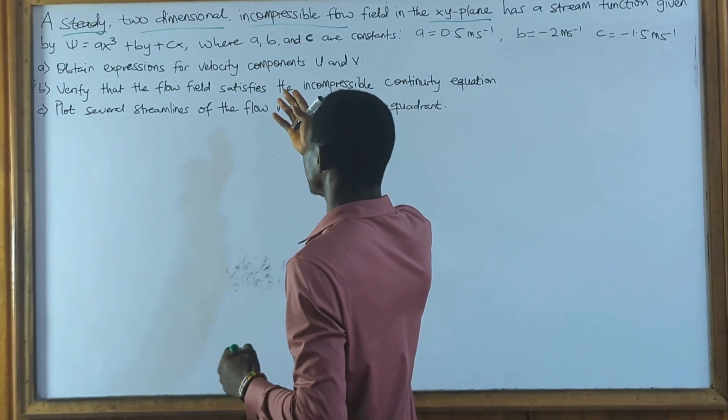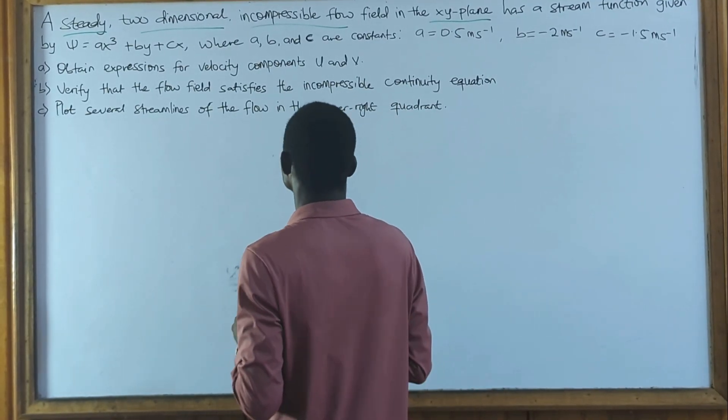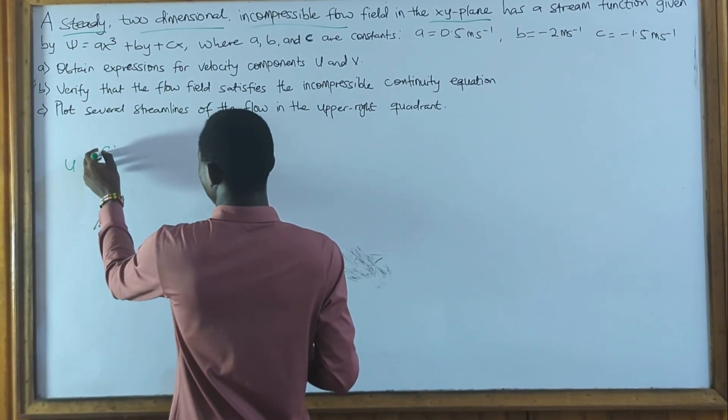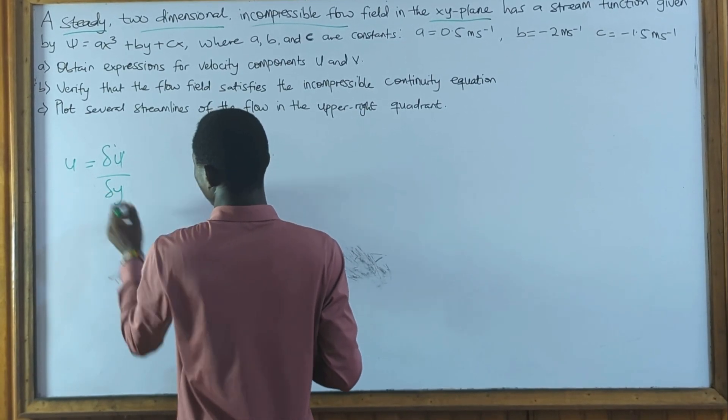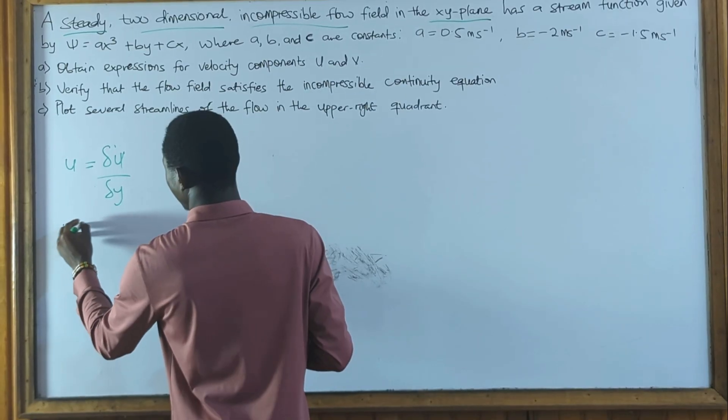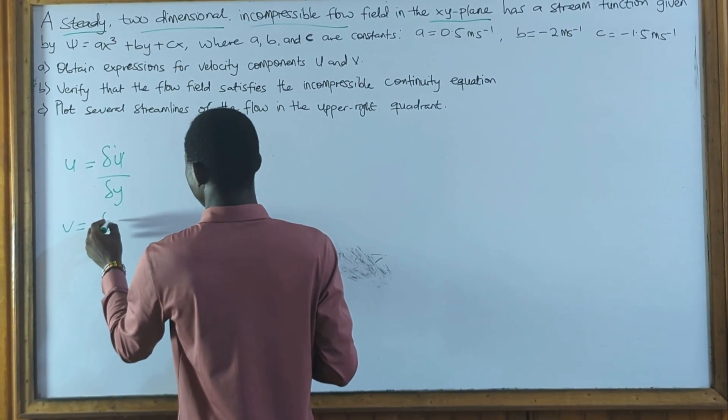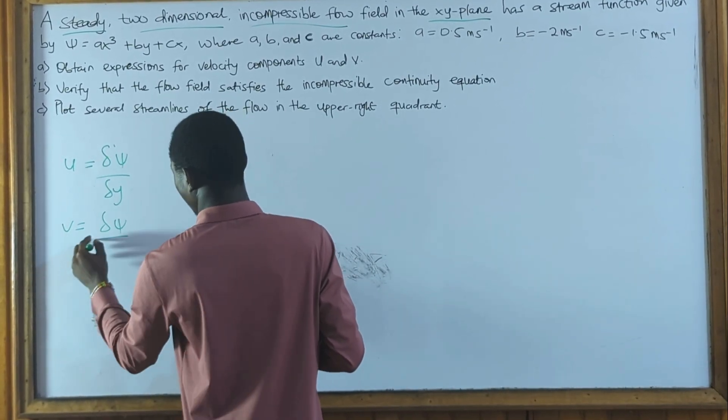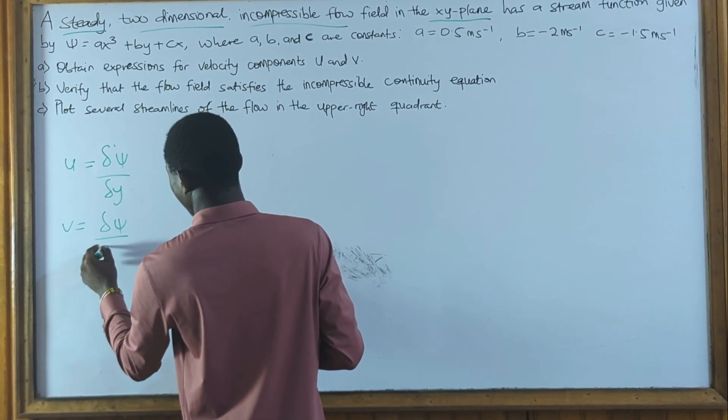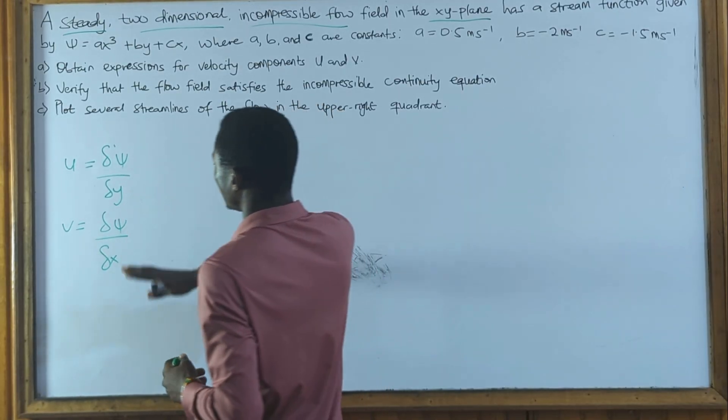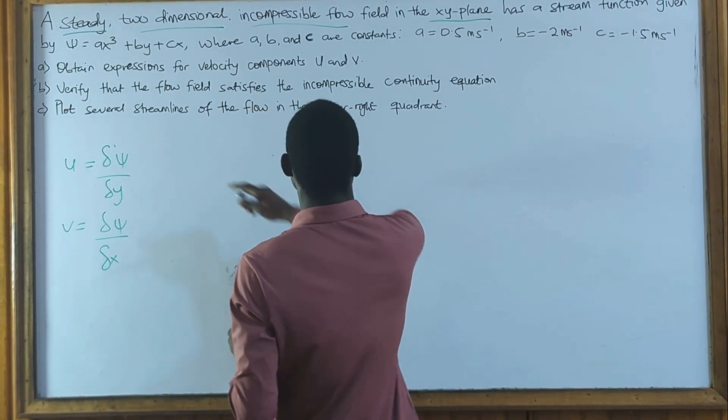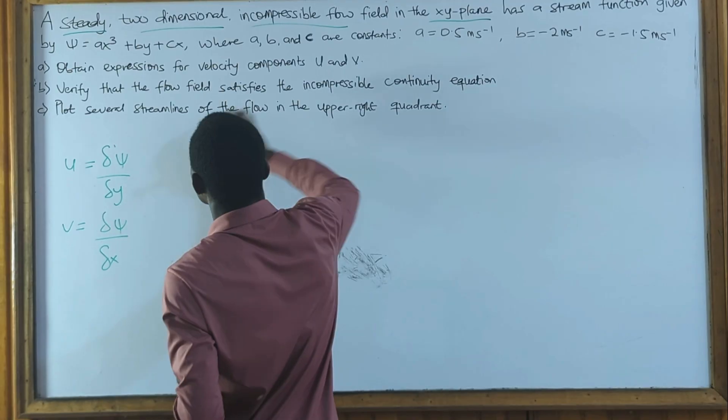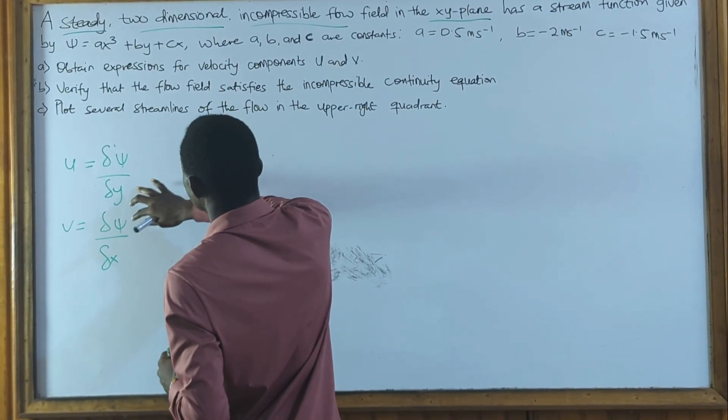So to obtain our expression, we know from our stream function that u = dψ/dy, and v = dψ/dx. So this is our equation, or this is our expression that we have here. So to find for our u, it means we have to differentiate ψ with respect to y.